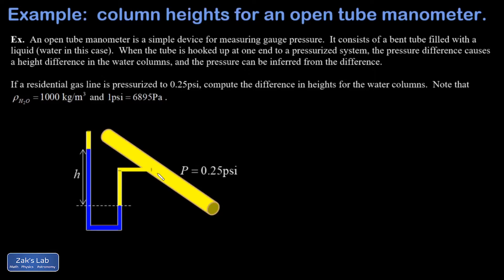Of course, if you were using this as a tool you would observe the height difference and use that to infer the pressure in the pipe. I want to mark a couple of things before we get started. This point here I'm going to call point A — it is open to the atmosphere, so atmospheric pressure is just one atmosphere, and since we're talking about gauge pressure, we count this as zero.